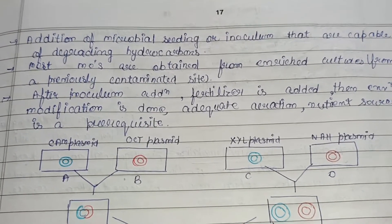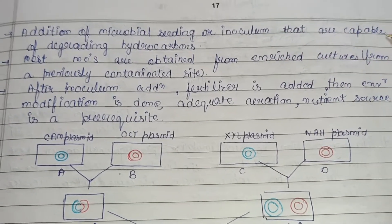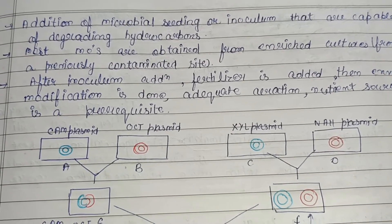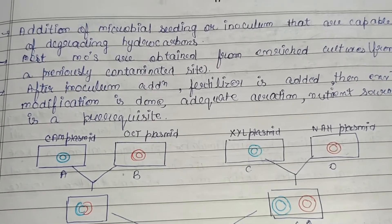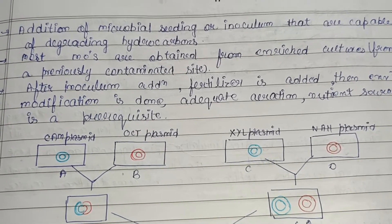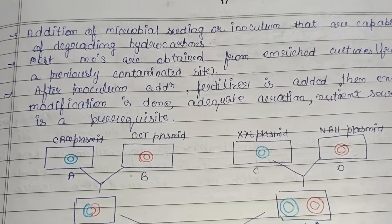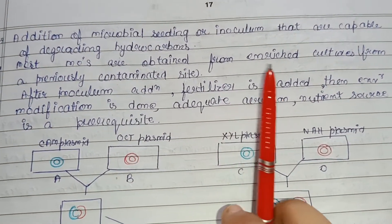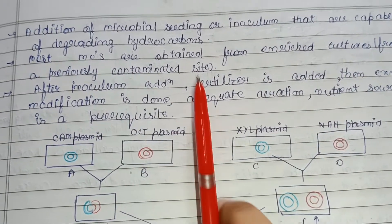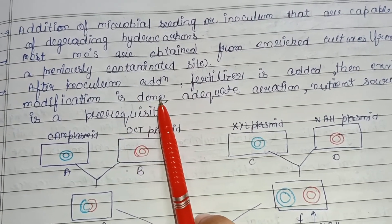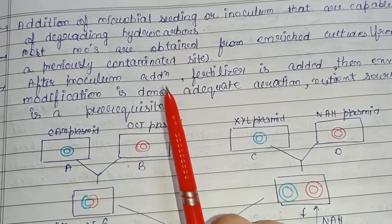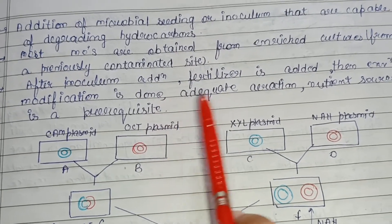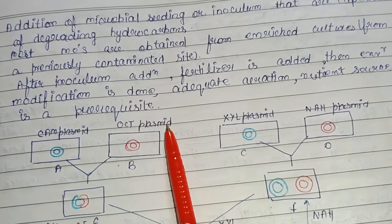Another approach is addition of a microbial seeding or inoculum — a sample of microorganisms capable of degrading hydrocarbons — taken from a previously contaminated oil spill site and introduced to the new site where bioremediation will take place. Most microorganisms are obtained from enriched cultures of previously contaminated sites. After inoculum addition, a fertilizer is added and the environment is modified to meet the microorganisms' needs, with adequate aeration and a nutrient source as prerequisites.